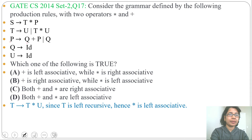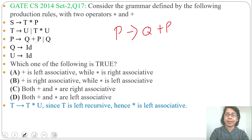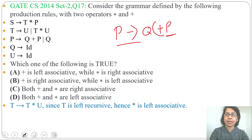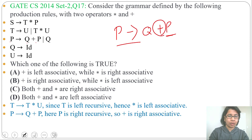Next: P → Q + P | Q. From the production P → Q + P, P is common in both LHS and RHS. Here P is present on the right side, so this grammar is right recursive. That's why the plus operator will be right associative.